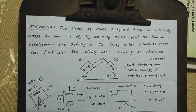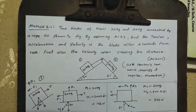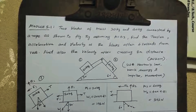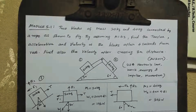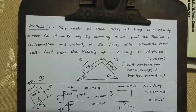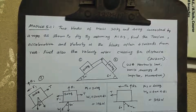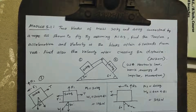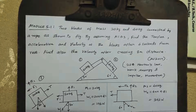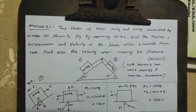Welcome to model number 5.1. Two blocks of mass 20 kg and 40 kg are connected by a rope. Assuming a coefficient of friction of 0.3, find the tension, acceleration, and velocity of the blocks after 4 seconds from rest. Find also the velocity after crossing a 3 meter distance.